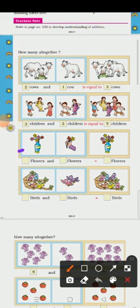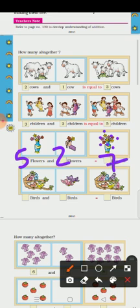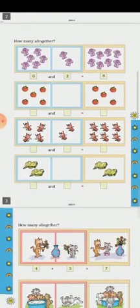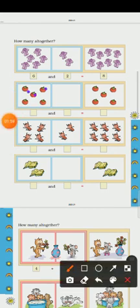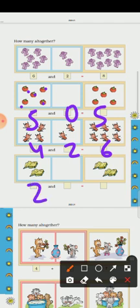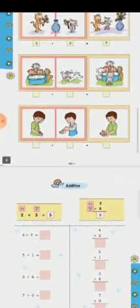How many all together? 6 shirts or 2. Total how many all together? 1, 2, 3, 4, 5.